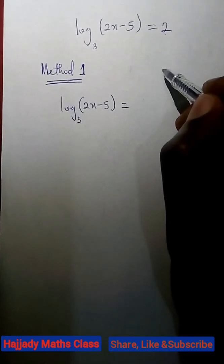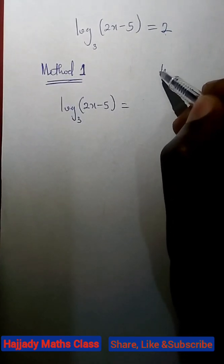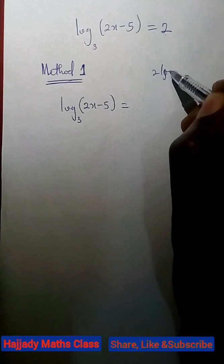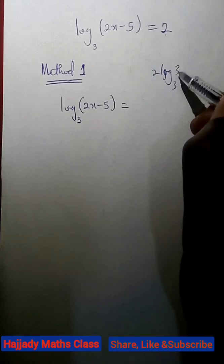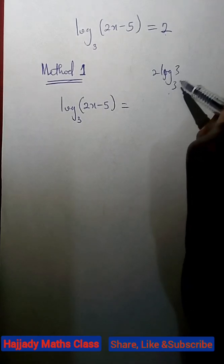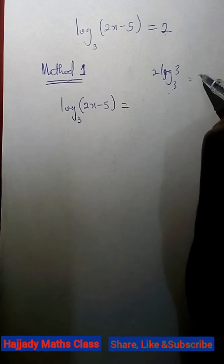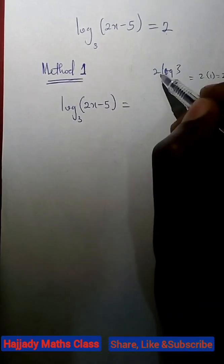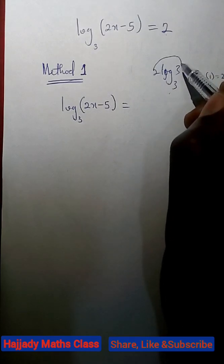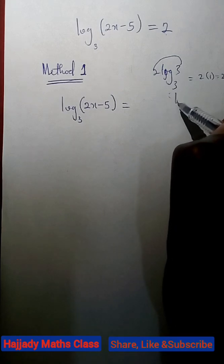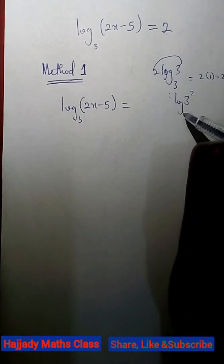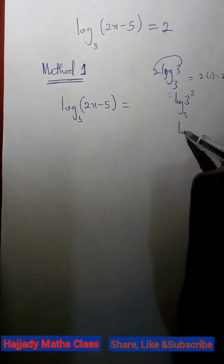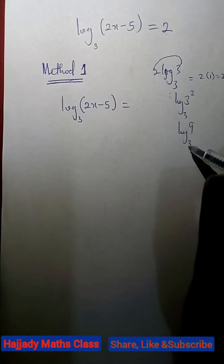And in doing that, you agree with me that when we have 2 log base 3 of 3. Log base 3 of 3 is the same thing as 1, right? Which is 2 times 1, which is 2. But here, you can also say that this will come to the power of this log number, which is the same as log base 3 of 3 to power 2, which is the same thing as log base 3 of 9.